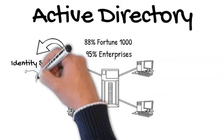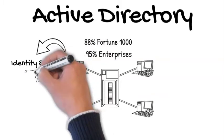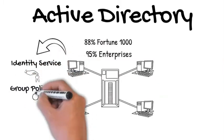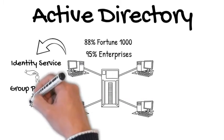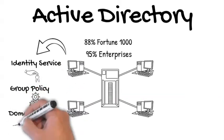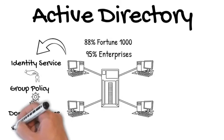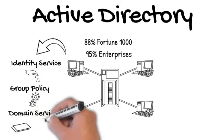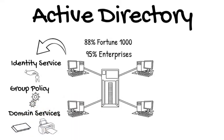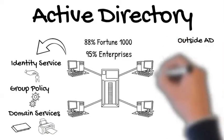Everything from identity services to user accounts, groups, and passwords, to group policy which gives you the ability to configure and secure these devices, to other domain services such as file servers and even print servers. All of these services provide unique capabilities for Active Directory.